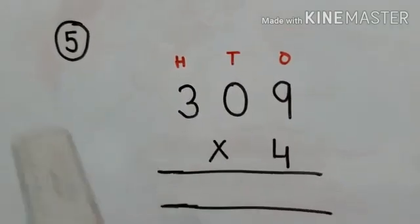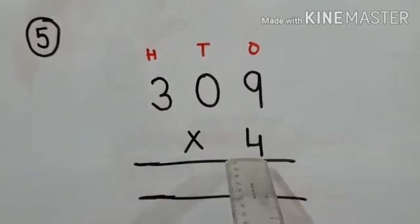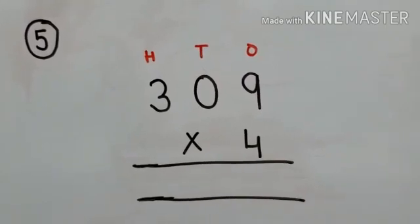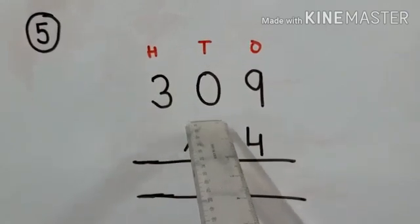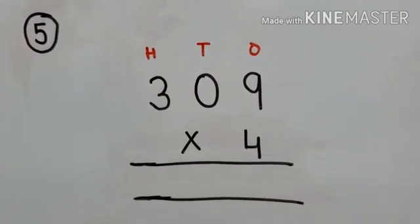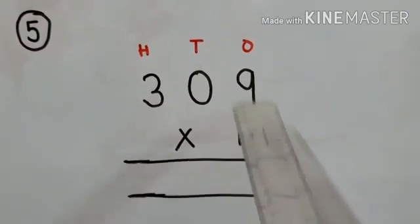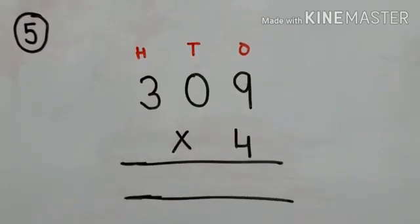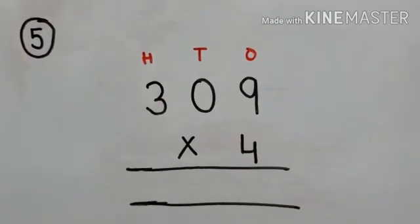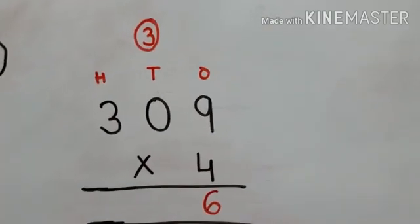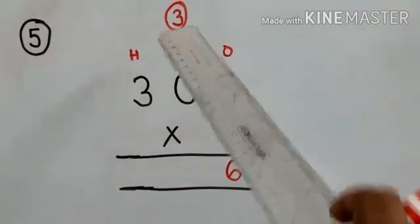Now coming to question number 5 — the number is 309 and we have to multiply with 4. Children, observe it clearly because here we are having a zero in the tens place, so watch it carefully. We start with the ones digit — we are having 9, so four nines are 36. We write 6 down and 3 is carried to the tens place.